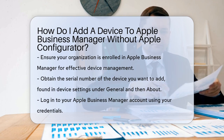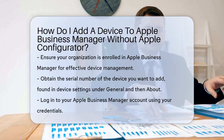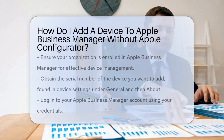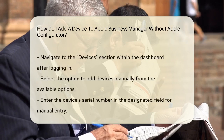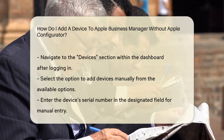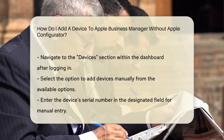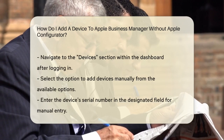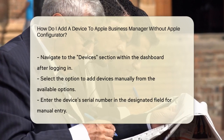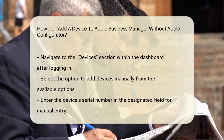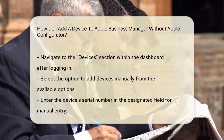Next, obtain the serial number of the device you want to add. You can find this number in the device settings under General and then About. It is crucial to have this serial number handy for the next steps.